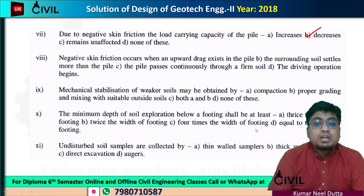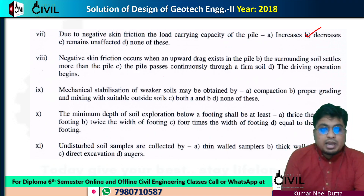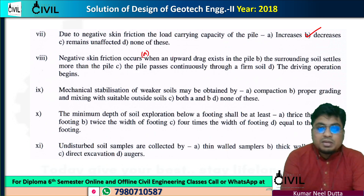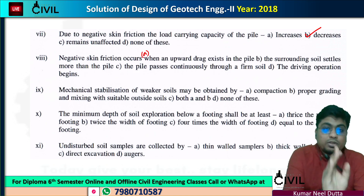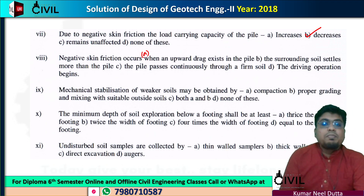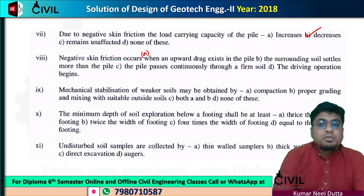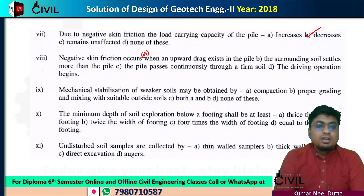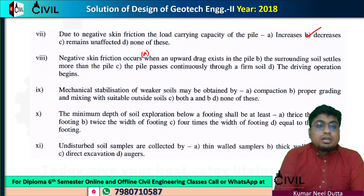Negative skin friction occurs when an upward drag exists in the pile — wait, that is a typing mistake in the option. Negative skin friction also occurs when the settlement of the surrounding soil is more than that of the pile. So negative skin friction occurs in that condition.